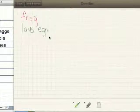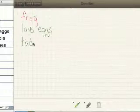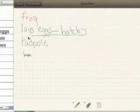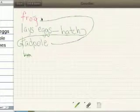E-G-G-S. The eggs become a tadpole. T-A-D-P-O-L-E. And the tadpole hatches. Whoops, the tadpole doesn't hatch. The eggs hatch. The eggs hatch. And the eggs become a tadpole. And the tadpole becomes a frog.